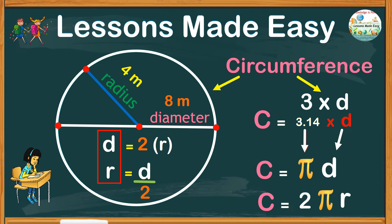It is actually the same because this 2r, or 2 times the radius, is derived from d, which is the diameter.